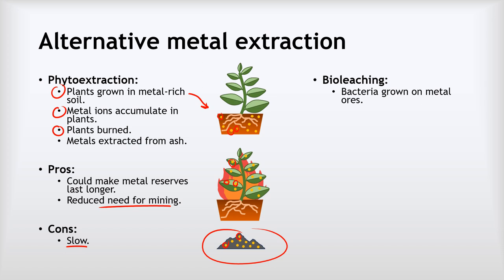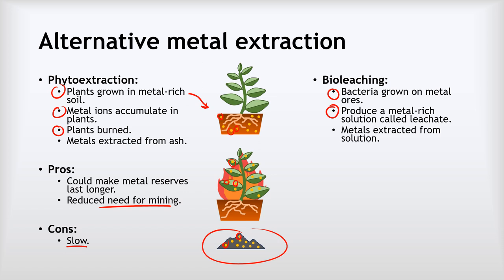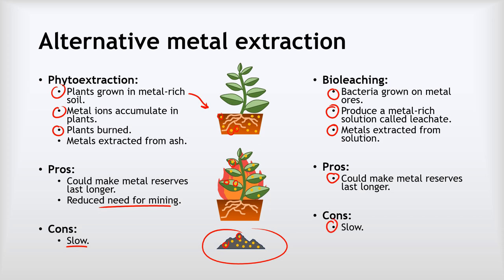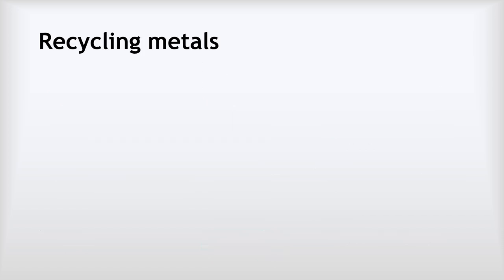The next alternative method is bioleaching. Bacteria are grown on low-quality metal ores, producing a very metal-rich solution called a leachate. Metals can then be extracted from the leachate by processes like electrolysis or displacement. Like phytoextraction, it can make metal reserves last longer by working with low-concentration ores. The downside is that it is slow. Unlike phytoextraction, bioleaching is actually conducted commercially, particularly on ores of gold and copper, though only in a few mines around the world.